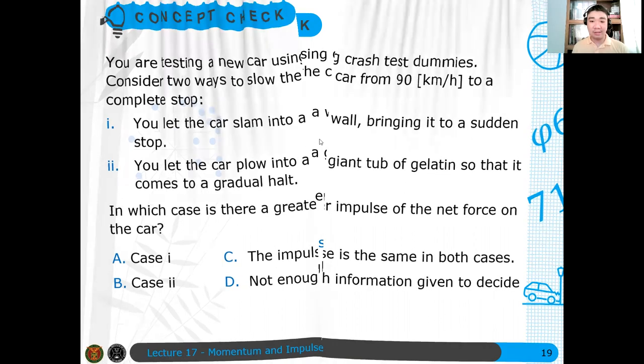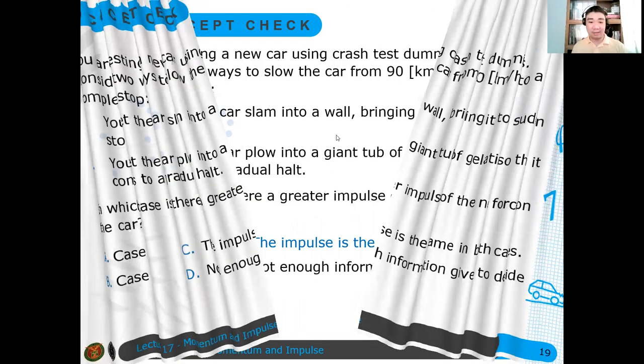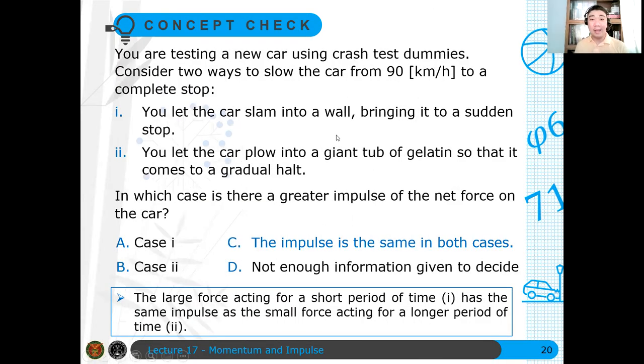The answer here is letter C. The impulse is the same in both cases because the large force, in one case there's a large force acting on a small time interval. In another case, there's a relatively smaller force acting but in a longer time interval. Therefore, if you determine the area under the curve of the force time plot that will be generated here, then the impulse, the calculated area will be the same in both cases.